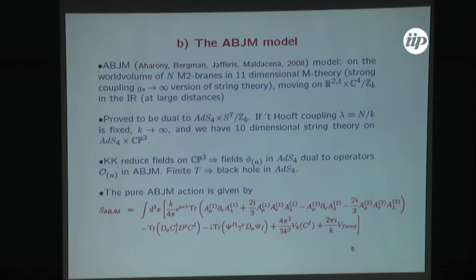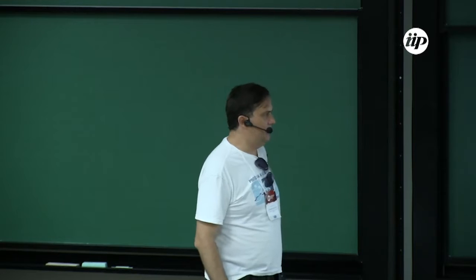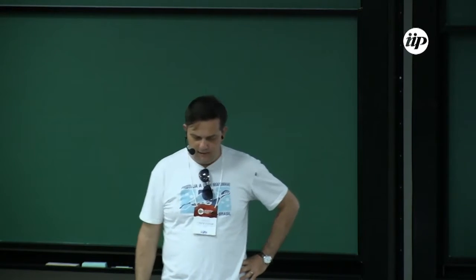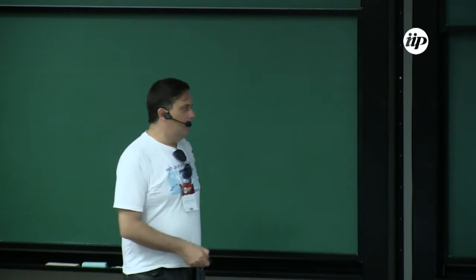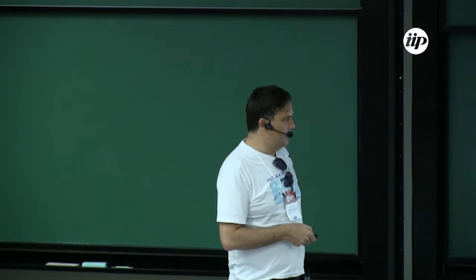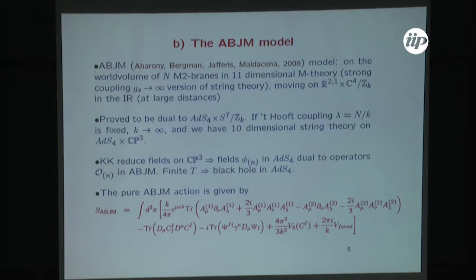Since we have this CP3 compact space, we have to dimensionally reduce on it, and we get some fields in ADS4 dual to some operators in ABJM. In condensed matter we generally want finite temperature, so we have to put a black hole in ADS4. Schematically the ABJM action has a Chern-Simons term for a U(1) group, then a Chern-Simons term with opposite level minus K for another U(1) group, then a kinetic term for some bifundamental scalars, a kinetic term for bifundamental spinors, a sixth-order potential for the scalars, and some terms for fermions interacting with the scalars.